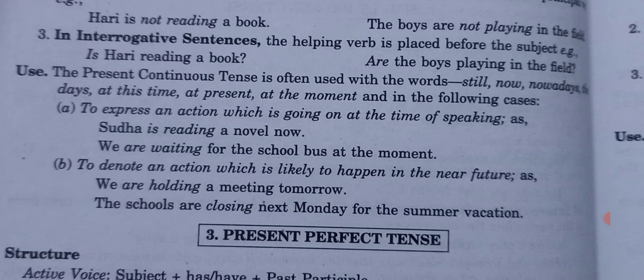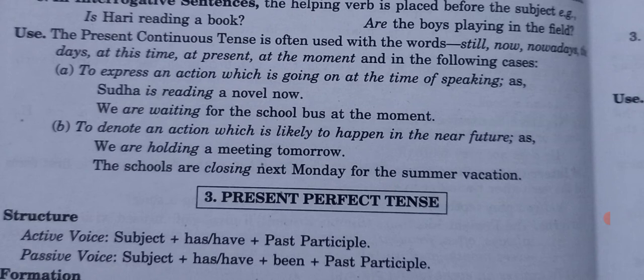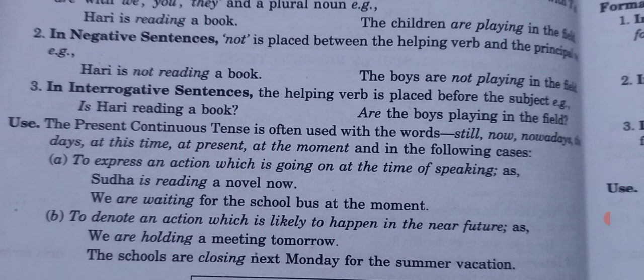The present continuous tense is often used with words like still, now, nowadays, at this time, at present, and at the moment. Use it: first, to express an action going on at the time of speaking — for example, 'She is reading a novel now', 'We are waiting for the school bus at the moment'. Second, to denote an action likely to happen in the near future — for example, 'We are holding a meeting tomorrow', 'The schools are closing next Monday for the summer vacation.'